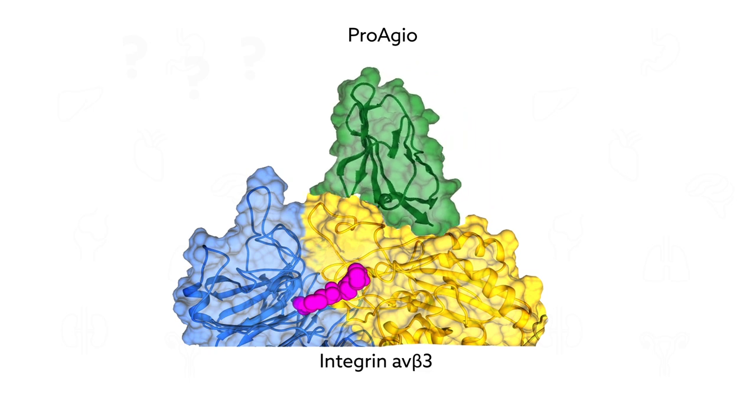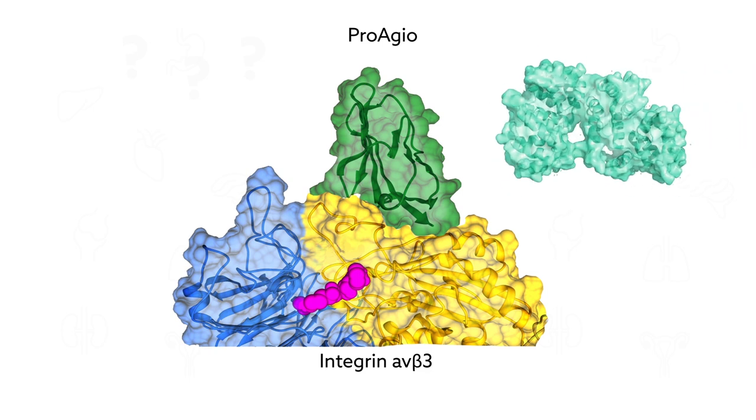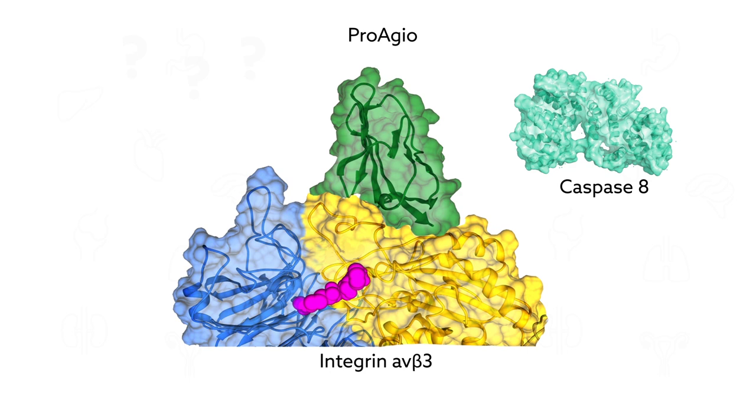ProAgyos is designed to bind to a different site of Integrin alpha-V beta-3 to produce an entirely different response. The protein's unique binding mechanism enables it to recruit and activate an enzyme called caspase-8, which plays an essential role in programmed cell death.